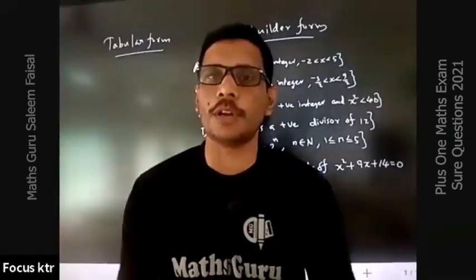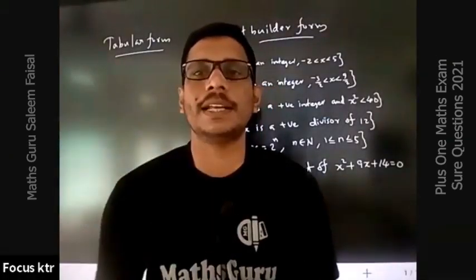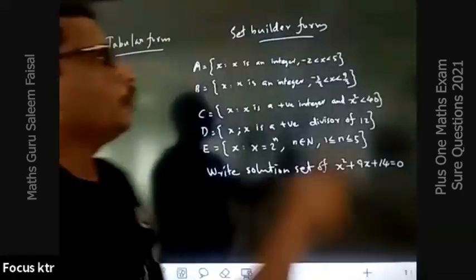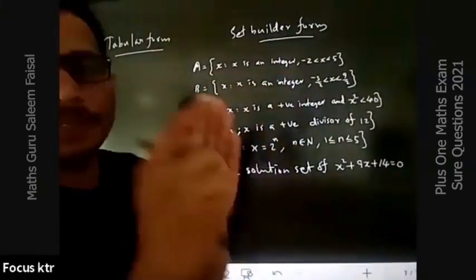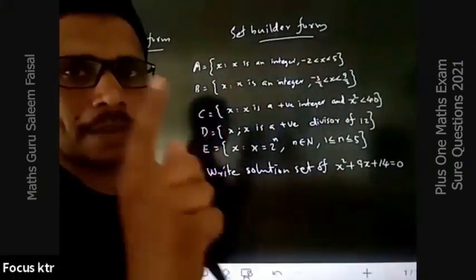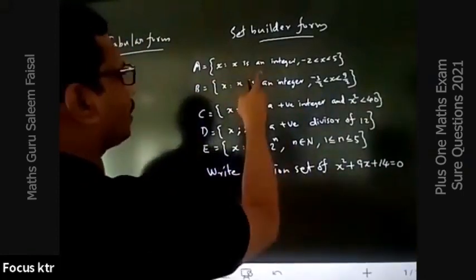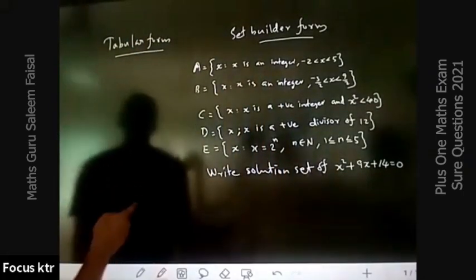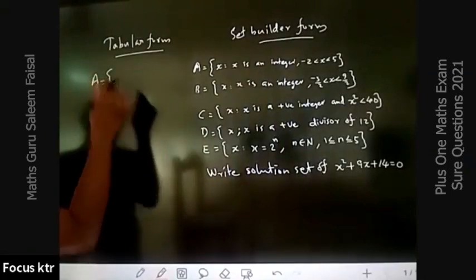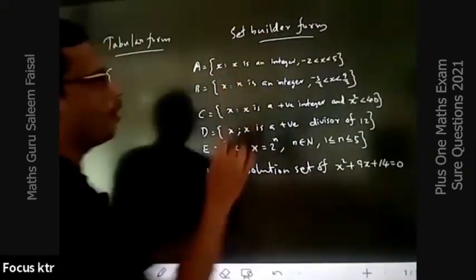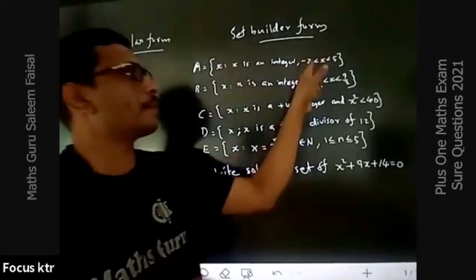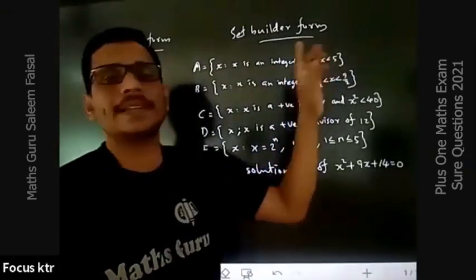There are several questions that we are going to ask about set builder form. We discussed in the first chapter, which is the set builder form. It is not a tabular form. We have to say, A is equal to set of all x such that x is an integer, minus 2 less than x less than 5.